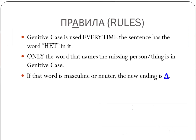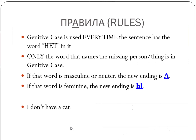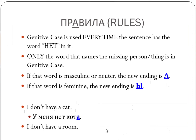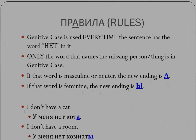If that word is masculine or neuter, the new ending is -а. If that word is feminine, the new ending is -и. For example: 'I don't have a cat' — кот is a masculine word, so we add -а: У меня нет кота. 'I don't have a room' — комната is a feminine noun, so we get the -и ending: У меня нет комнаты. I wish I could stop here, but there are exceptions — we'll talk about them in the next video.